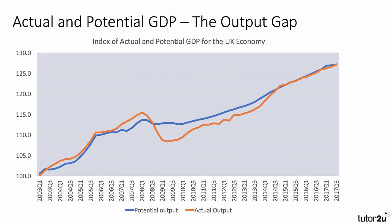Economists working for the Bank of England or the Office of Budgetary Responsibility, for example, have to estimate what the supply-side economic potential of the economy is. They need to know what's happening to productivity, to the labour supply, and to the number of hours people are working. This is a key evaluation point if you get a data response question on this.